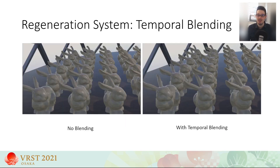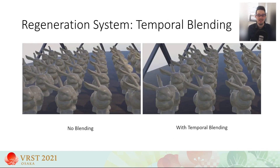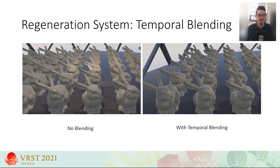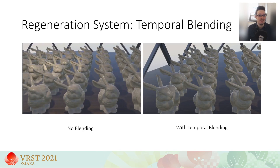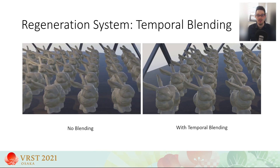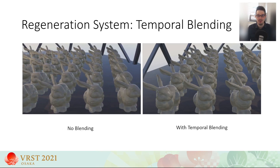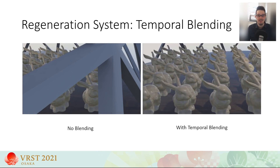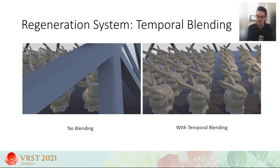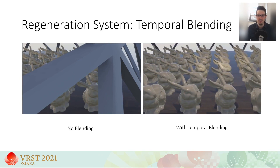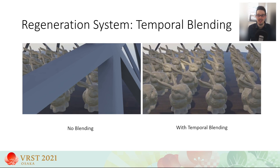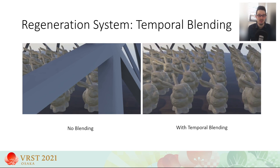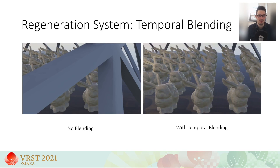As impostors are replaced by new ones, the resulting image can suffer from sudden popping artifacts, hurting the overall temporal stability. For this reason, we perform a blending operation between the old and the new impostor image. As a new impostor is finished regenerating, the current impostor is copied over to a third atlas, the history atlas, where it can be used for interpolation towards the new impostor image.